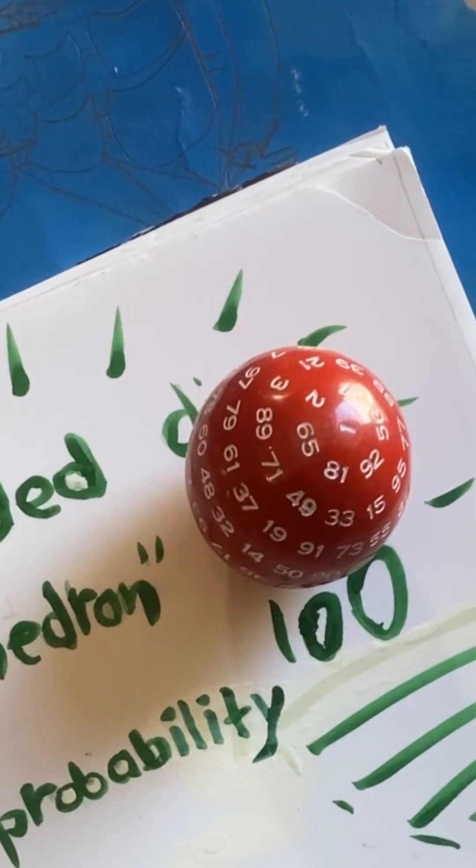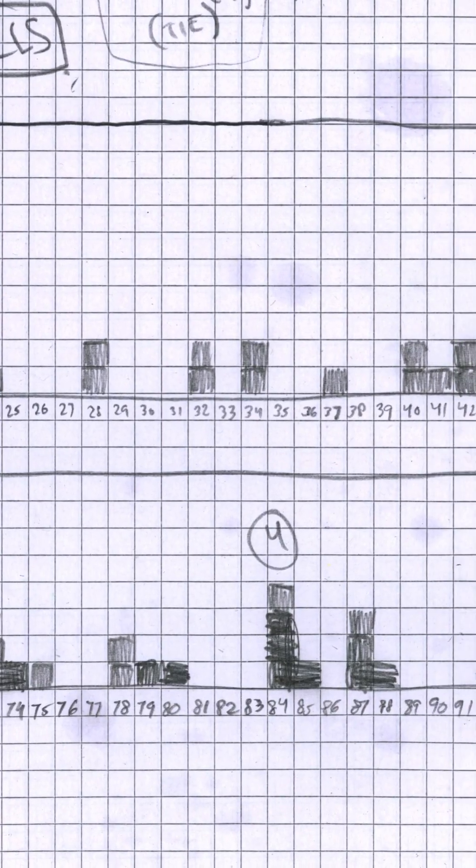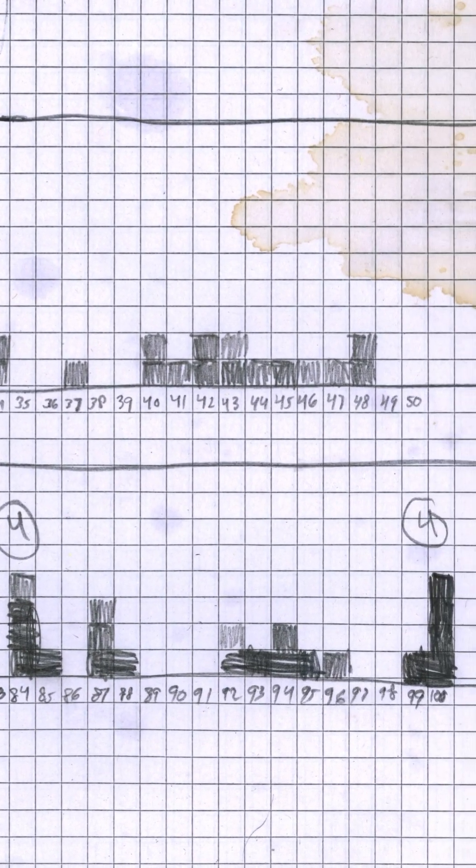The D100 had a tie for the most common roll as well, the number 84 and the number 100.